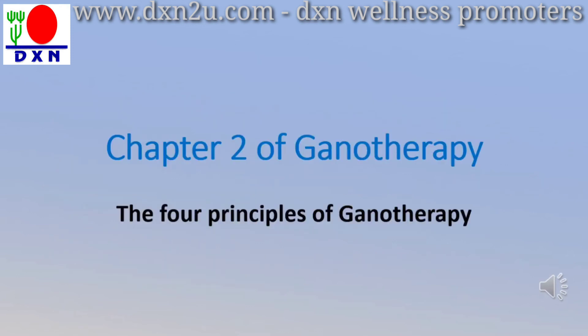Now we come to Chapter 2 of Gendronoma. In Ganotropy, there are four principles, and we are going to discuss in detail about these four principles.